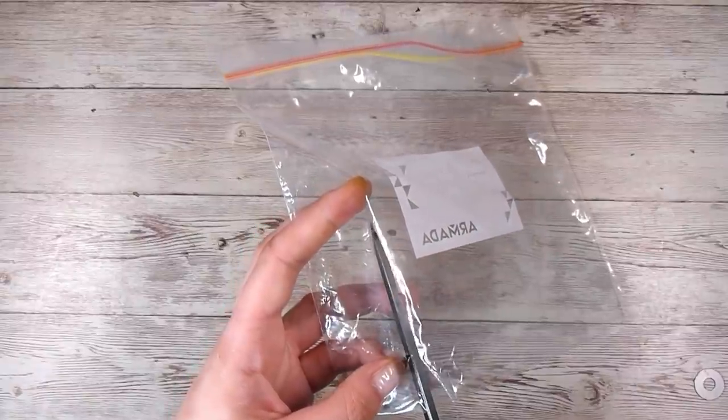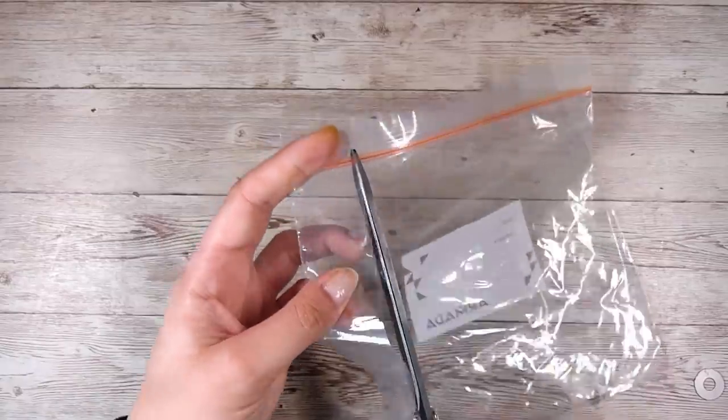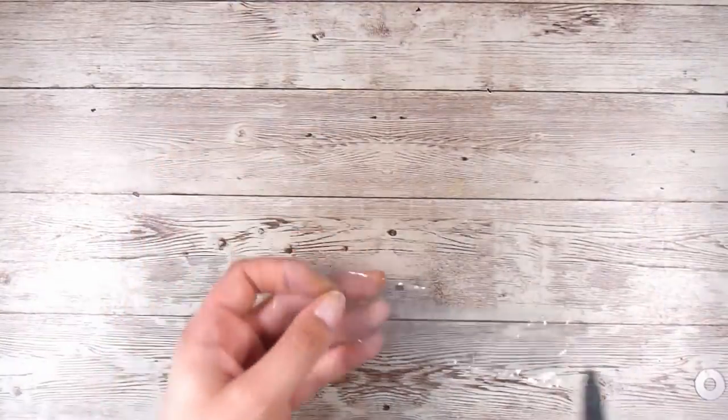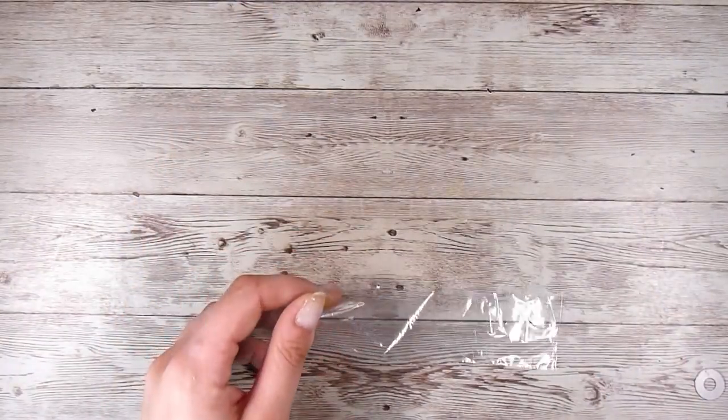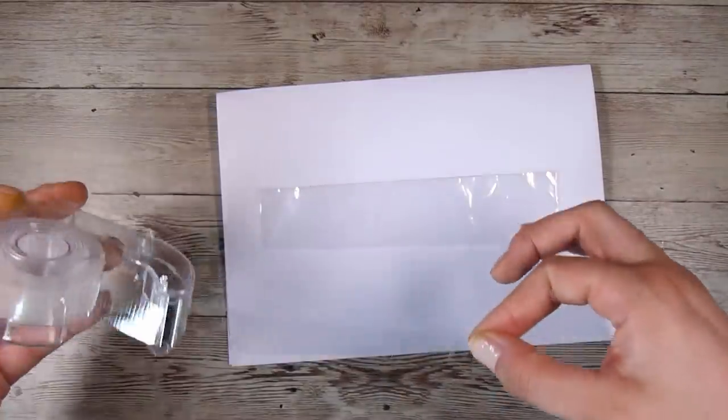You can also, of course, use acetate or recycled packaging from stamp sets and things like that. So just use whatever you have around the house. And for me, this is just like a really easy technique using the plastic bag. But to each his own, whatever you are more comfortable with.